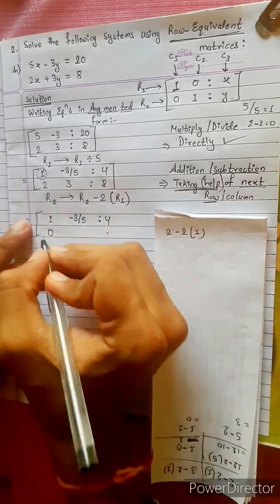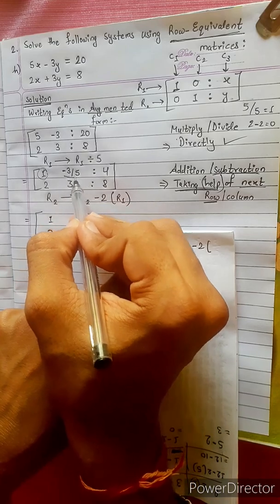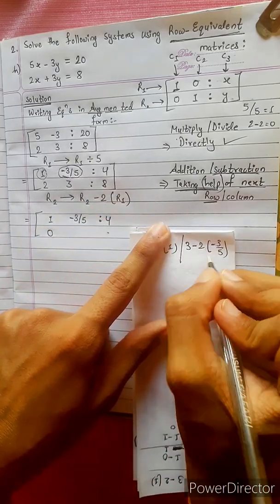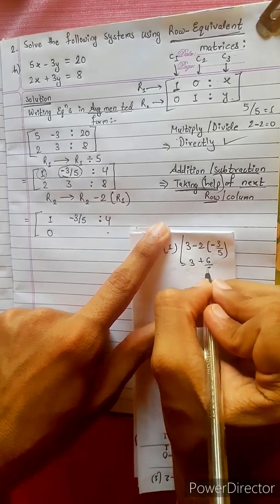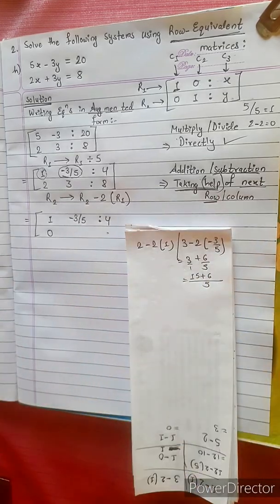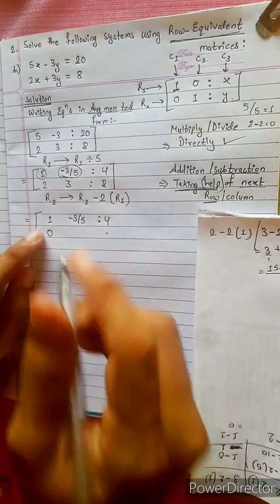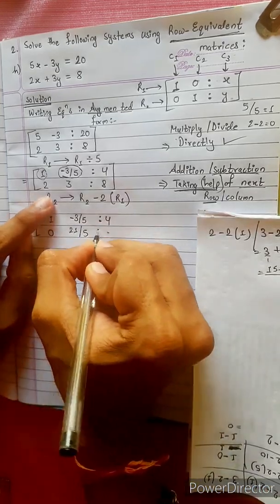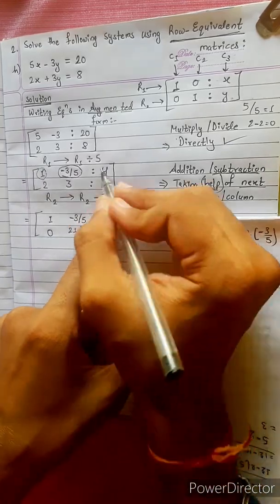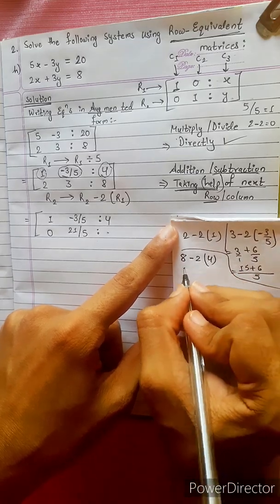For the second entry: 3 minus 2 times (minus 3 by 5). That is 3 plus 6 by 5. Finding LCM gives 15 plus 6 over 5, which equals 21 by 5. For the third entry: 8 minus 2 times 4 equals 8 minus 8, which is 0.